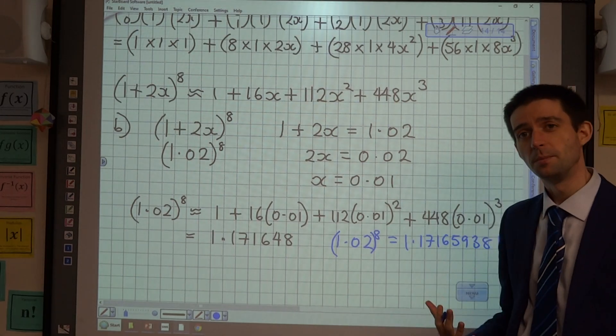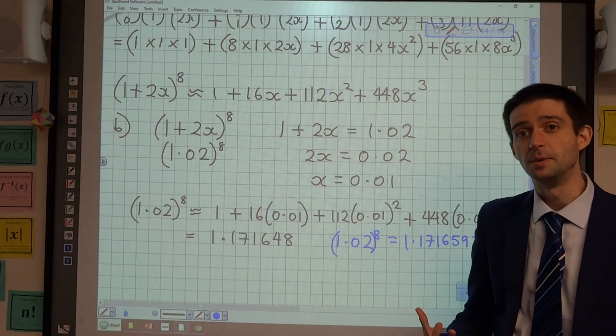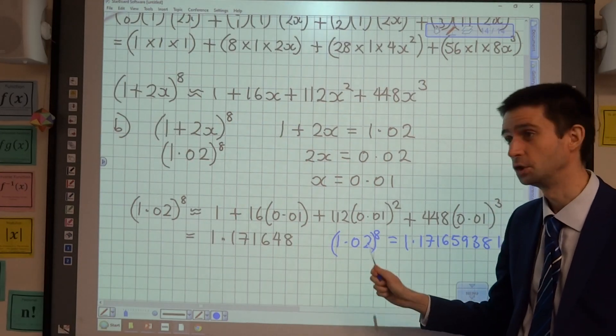You should expect that. You won't be able to do an approximation with a binomial expansion unless you're going to get something reasonably close. So it's a good checkpoint.